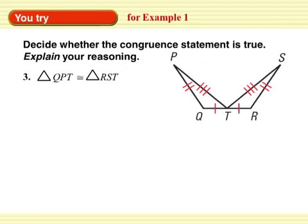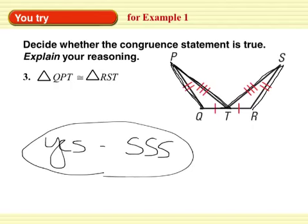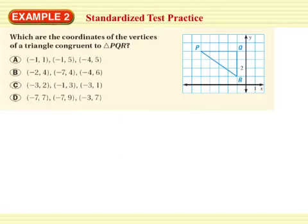Decide whether the congruent statement is true. Explain your reasoning. Again, push pause and check it out. Not too difficult. Yes, side, side, side. Double check: Q, P, T is 2 ticks, 3 ticks, 1 tick. R, S, T, 2 ticks, 3 ticks, 1 tick.